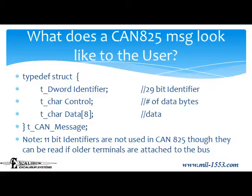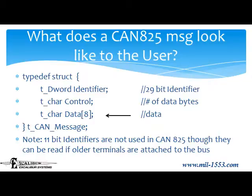The user only needs three fields from the message. The identifier is used to determine if the message is intended for this user and how to interpret the data if it is. The control byte tells the user how many bytes of data are associated with the message — this may be any number from 0 to 8. And the data itself is the final field. The automotive CAN spec allows 11 or 29-bit identifiers, but CAN 825 mandates a 29-bit identifier. Avionics devices developed before ARINC 825 may transmit 11-bit identifiers and new devices will generally be able to read the data from those devices.